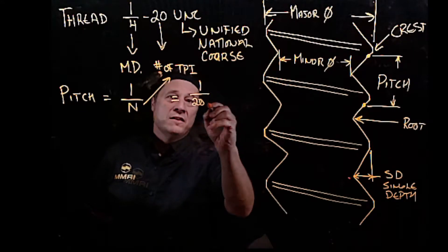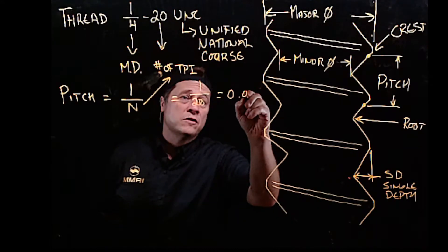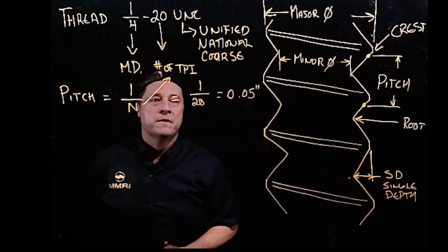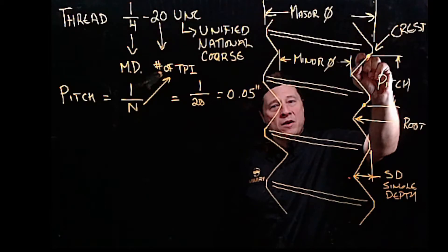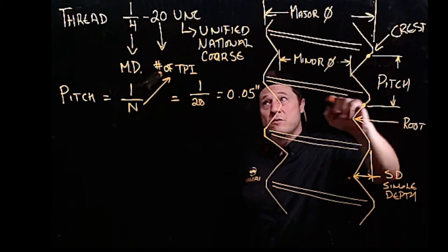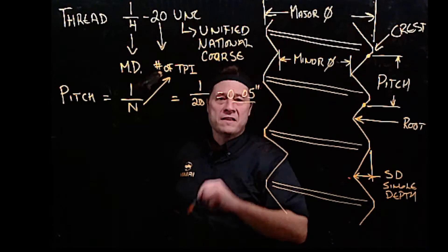Therefore, the pitch would equal 0.05. So the distance from a point on one thread to the same point on the next thread on a quarter-20 UNC is 50 thousandths of an inch.